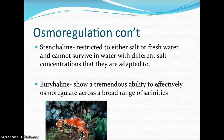A euryhaline organism has a tremendous ability to osmoregulate across broad ranges of salinities. Perfect examples are organisms that live in estuaries — brackish water environments where freshwater from land meets ocean currents, creating a broad range of salinities. Heavy rain decreases salinity toward freshwater conditions; a coastal storm can push ocean water into an estuary like the Chesapeake Bay, increasing salinity. Organisms in estuarine environments must adapt to these fluctuations and are called euryhaline or halophilic organisms — 'halo' meaning salt.